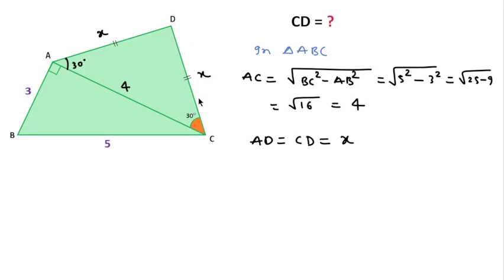In triangle ADC, using the cosine rule, we can write cos 30 degrees equals AC squared plus AD squared minus CD squared, over 2 times the product of these two sides.